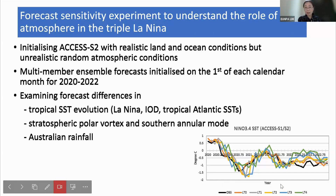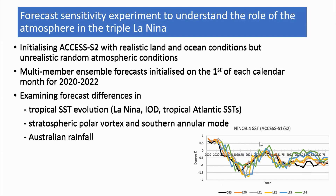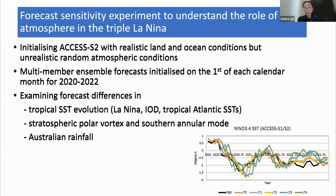As you can see in this line graph, the black line is the observed La Niña evolution — NIÑO 3.4 SSTs — and the colored lines are the XSS1 and 2 real-time forecasts over that period. You can see that the 2020 La Niña, the second dip, and the 2022 La Niña were kind of well-captured by XSS1 and 2 short-range forecasts. But how much of this predictive skill comes from the atmosphere versus ocean? That's the question we want to address.